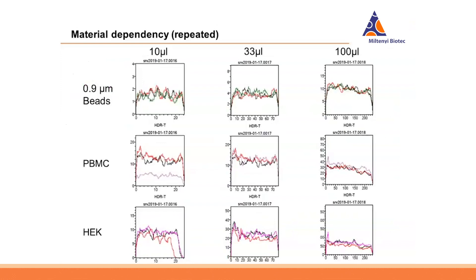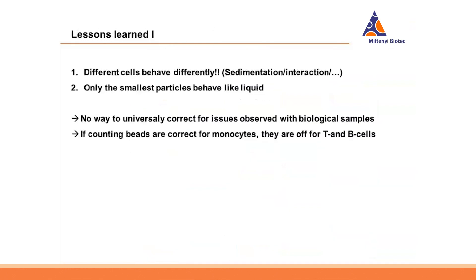To prove this was not random but truly material-specific, we plotted different materials separately: 0.9 micrometer beads at 10, 33, and 100 microliters; PBMCs in a second diagram; and hex cells in a third. In all cases, the event rate for hex cells drops early towards the end of the measurement, whereas small particles stay at comparable levels throughout, and PBMCs fall somewhere in between. This confirms that the observed effect really is material-specific and not arbitrary or instrument-specific.